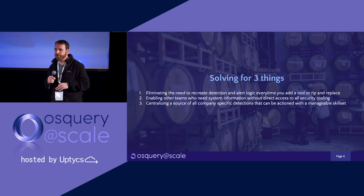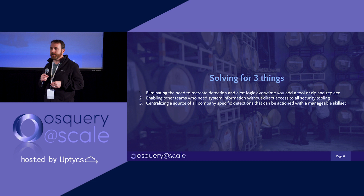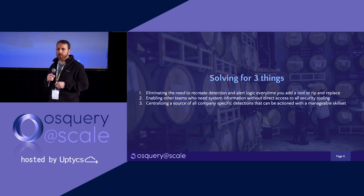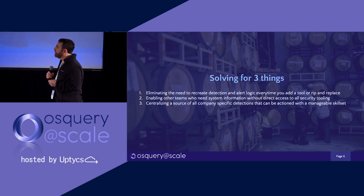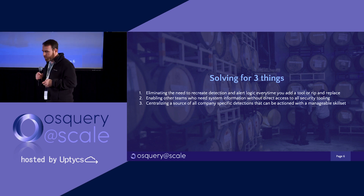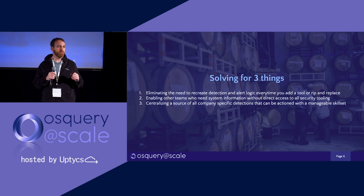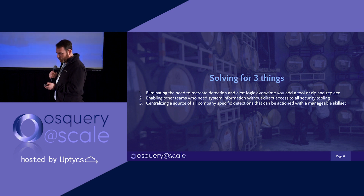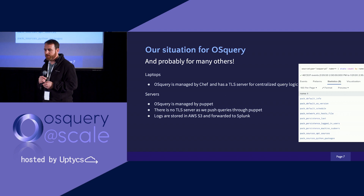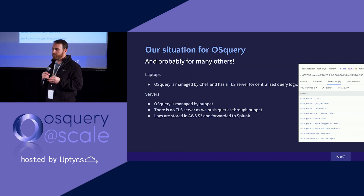We also have teams that use OSquery for aspects beyond security — a good example is software or configuration management. Our corporate engineering team uses it for managing machines, making sure all the agents are there, that Jamf is on those machines, and for understanding our software inventory. We wanted to come up with a centralized methodology that anybody at Stripe could use to action detections and alerts — independent of giving them access to all of our machines and security tooling — while also reducing the number of tools people have to learn but still getting great value out of them.